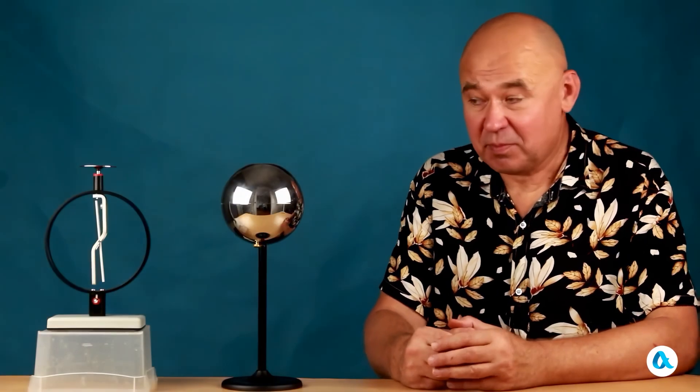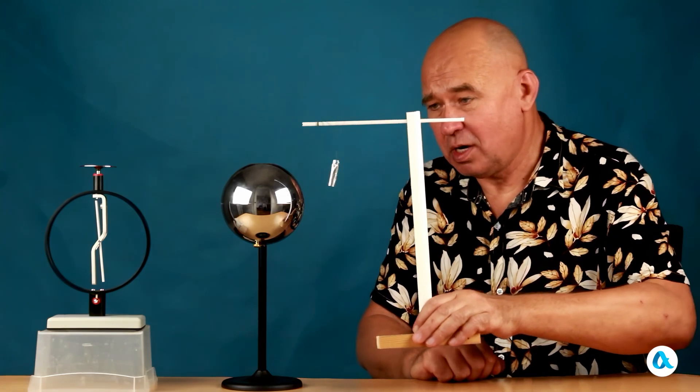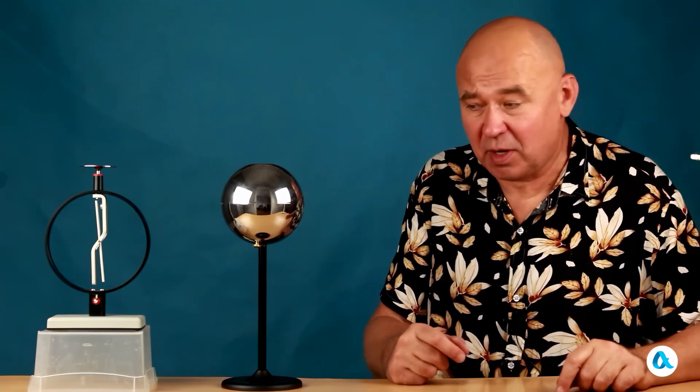And now another experiment. The ball is now already negatively charged. To confirm this, let's bring the sleeve to it. It was attracted, then bounced off. We already know the explanation for this part of the experiment.